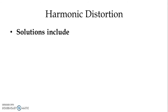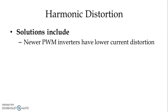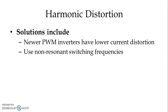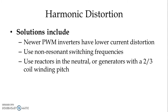Some solutions include newer pulse-width modulated inverters that have lower current distortion, using non-resonant switching frequencies, and using reactors in the neutral or generators with two-thirds coil winding pitch.